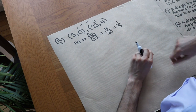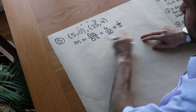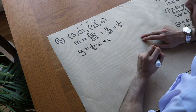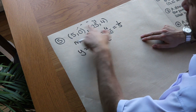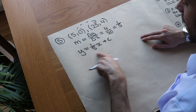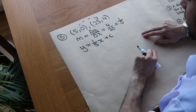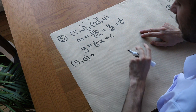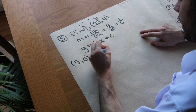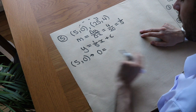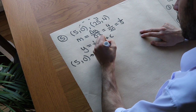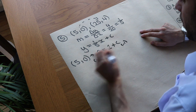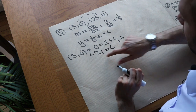We don't know c yet, so we write y equals one-fifth x plus c and choose one of the two points to substitute in. Choosing the point 5, 0: y is 0, so 0 equals one fifth of 5, which is 1, plus c. We subtract 1 from both sides and get minus 1 equals c. So c is minus 1.